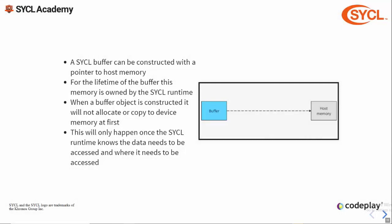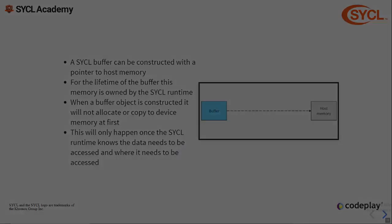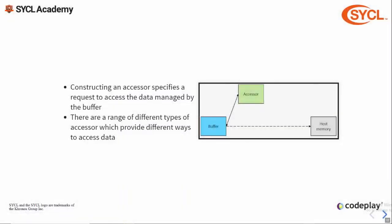There are many ways to construct a buffer that give you a range of options for managing data. A buffer can be constructed with a pointer to host memory — memory allocated on the host application. For the lifetime of the buffer this memory is managed by the buffer, so modifying the original data on the host is undefined behavior, as the runtime needs to be able to freely move it between the host application and any devices accessing it. One important thing to note is that buffers are lazy — they won't allocate memory or copy anywhere until they're told to, which only happens when the runtime knows where the buffer needs to be accessed.